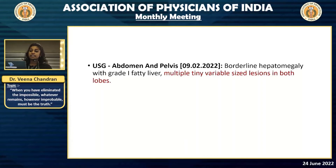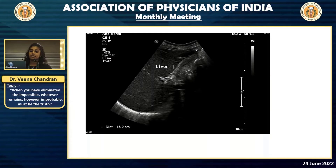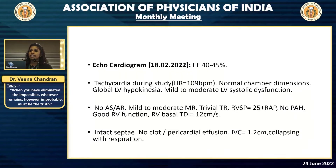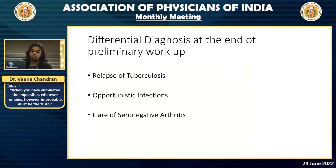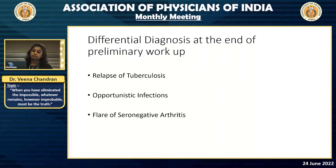Ultrasound abdomen showed multiple variable-sized lesions in both lobes of the liver. An echocardiogram was taken which showed an EF of 40 to 45% and a global LV hypokinesia. At this point, we knew that the patient had developed some form of myocarditis. What was puzzling was the lesions present in the liver — we had no idea what those were at that point.